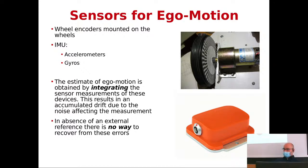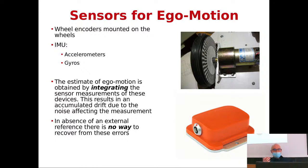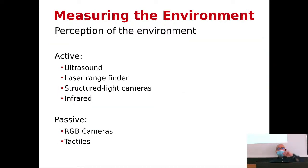You observe the world with specific sensors, and by observing the world you get an indirect estimate of where you are, because the observation — even from a camera — depends on the location where you acquired that image. This indirectly measures your location in the world, of course assuming that the world is stationary.